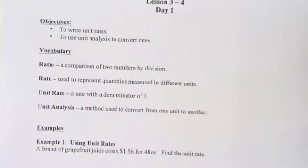So the vocabulary, first we have ratio. A ratio is a comparison of two numbers by division. It's just a comparison of any two numbers, like ratio of boys to girls maybe. If there were six boys and three girls, the ratio would be six to three. That is a ratio.